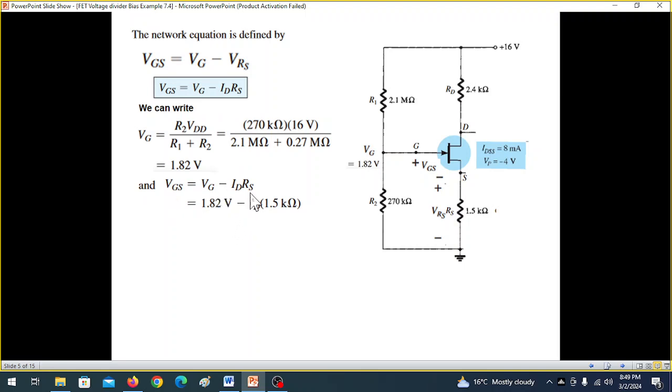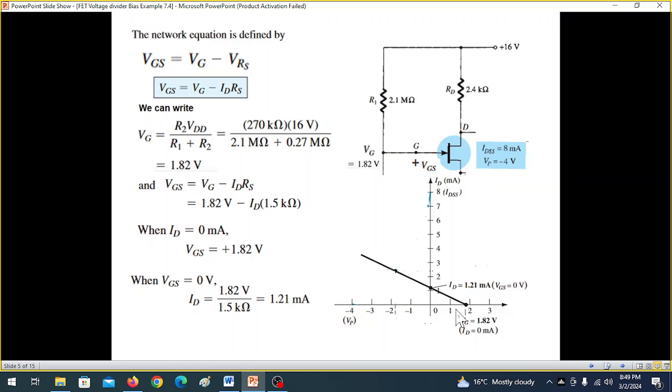And now in this equation, the network equation, we put the value of VG. We don't know ID but we know RS is 1.5K. And now if we assume that ID is zero milliampere from here, then VGS will be 1.82. And if we take VGS is equal to zero, then ID from this equation will be 1.21. So these two points are enough to plot our network graph. First point is 1.82, and the second point is 1.21. So we connect this line. So this is the network graph.